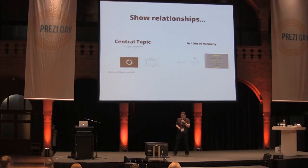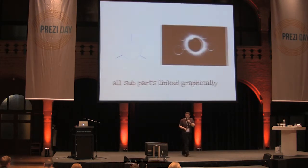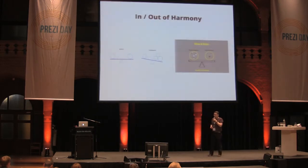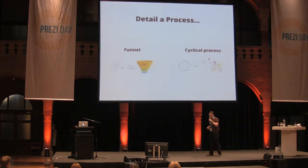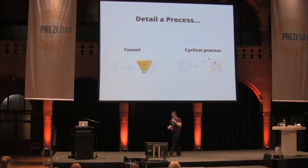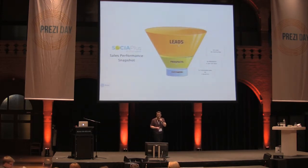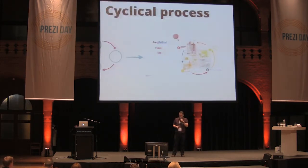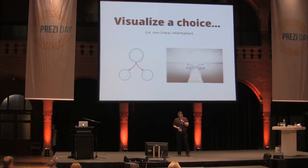Diagrams are great for relationships or processes or things that aren't necessarily linear. We've got central topics where the subparts are linked graphically. Here's an actual user presentation about the federal budget — things in and out of harmony. A great presentation from one of my colleagues here. Funnels — everyone loves a good process funnel — great for sales presentations. These are actual presentations from users I've found on Prezi.com Explorer, not doctored by me in any way. Cyclical processes.